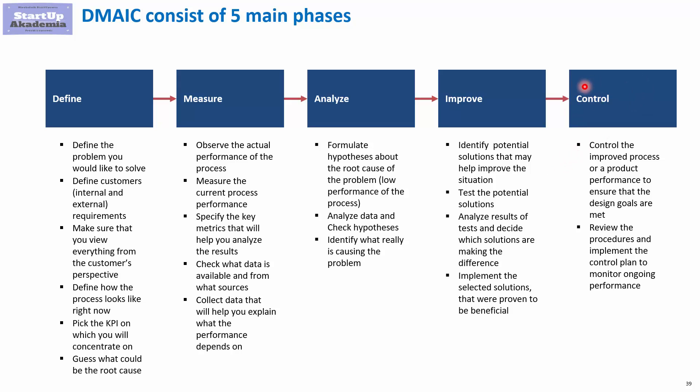Finally, you have the Control stage. Here you want to do two things: first, create a situation where the process will remain delivering high-quality products; and second, have some sort of a controlling system that will help you check whether the process is performing according to the new requirements.